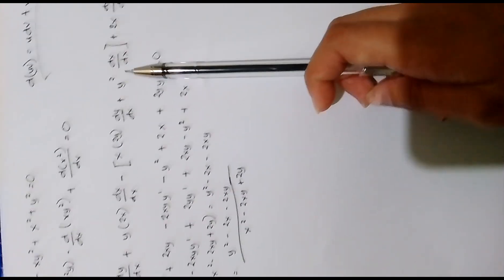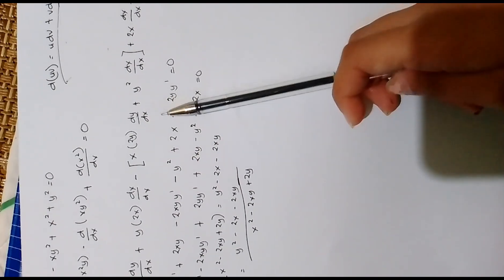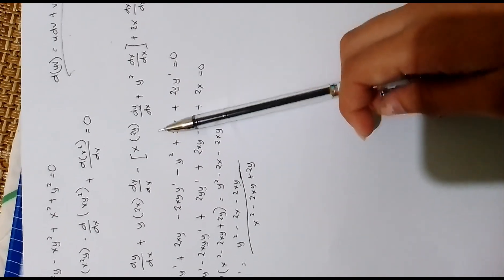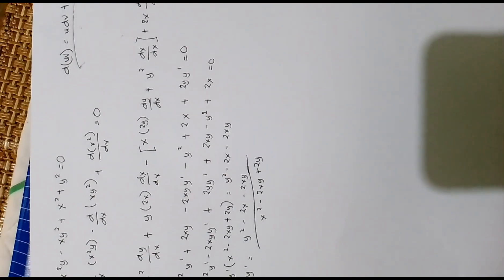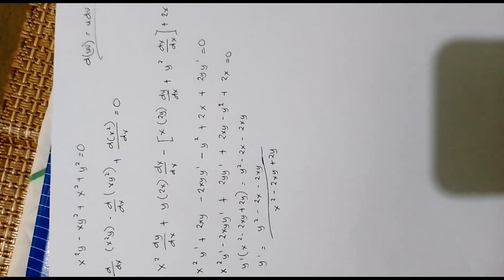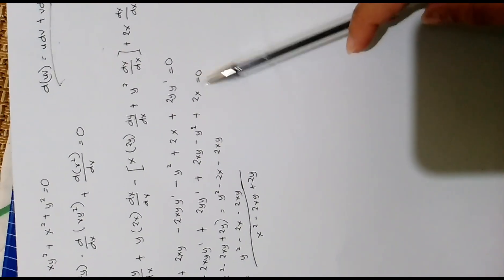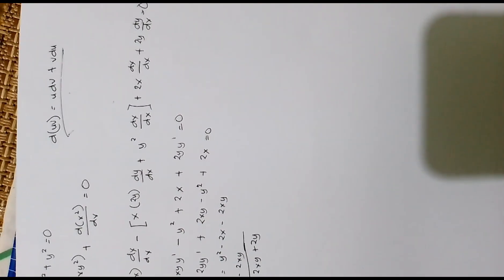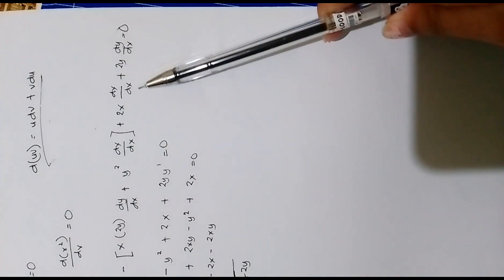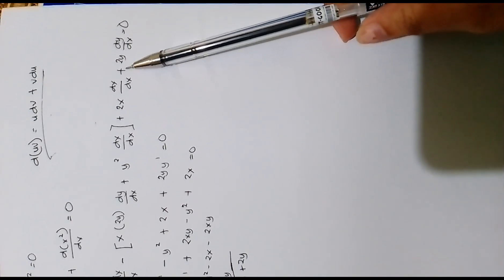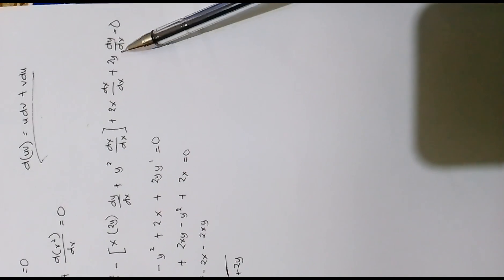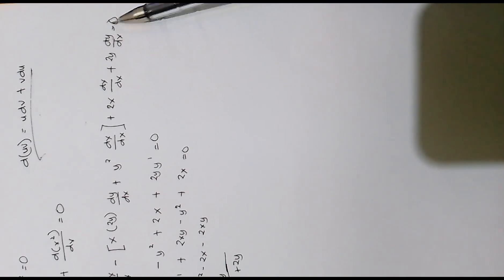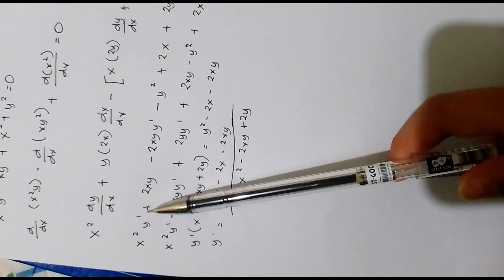Then plus copy y squared, differentiate x, so that is y squared times 1. Then plus the derivative of x squared, which is 2x. Then plus 2y times dy with respect to x. All of this is equal to zero. Now let us simplify.